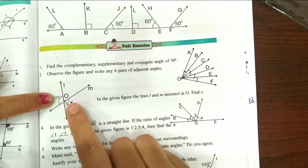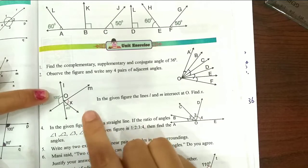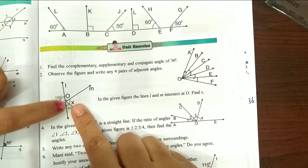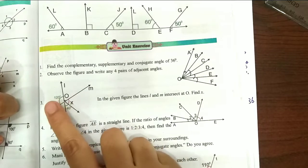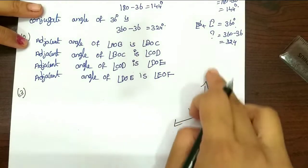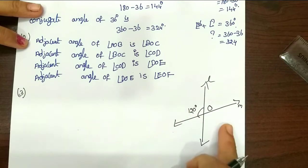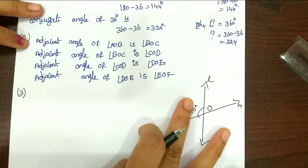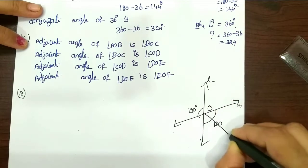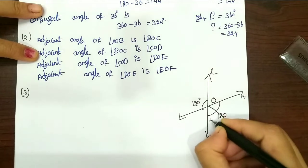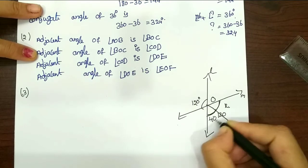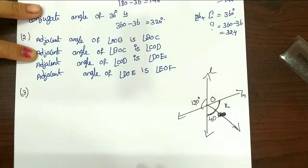One angle is 120 degrees, and the opposite angle is equal to 120 degrees because vertical opposite angles are equal. The other angle is given as 40 plus X. So 40 plus X equals 120 degrees.